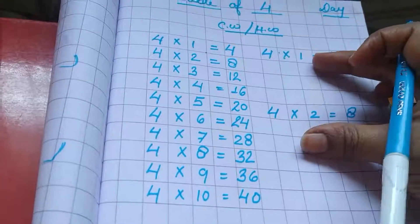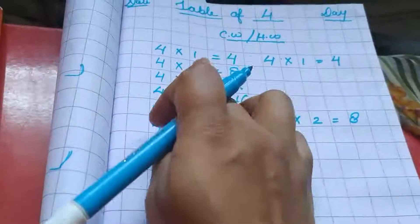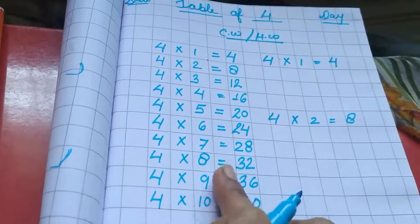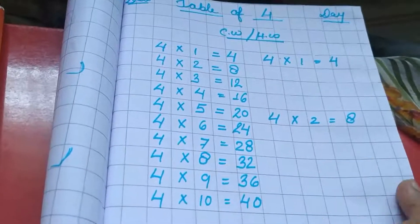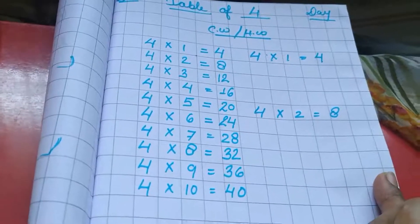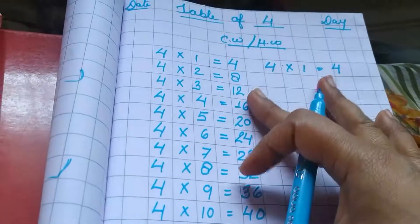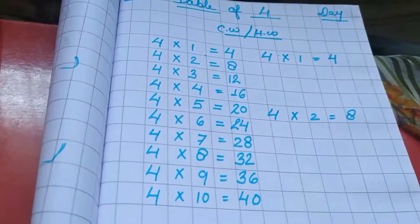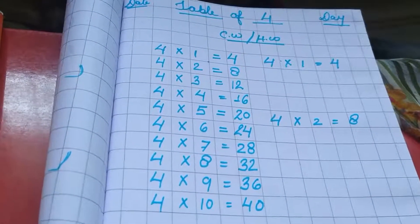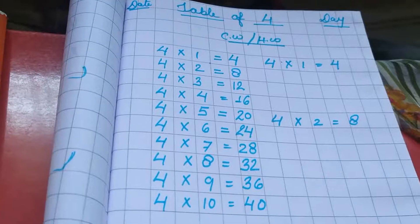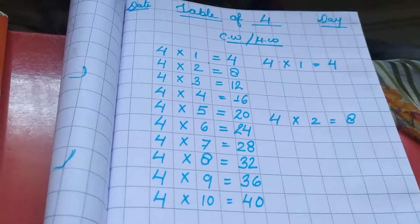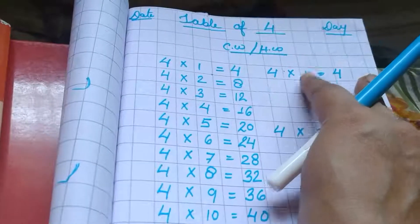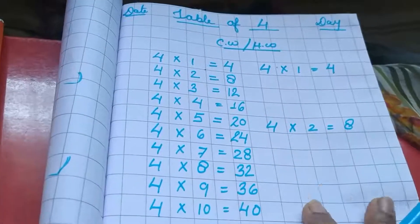Here: 4, 1, 4. And here: 4, 2, 8. Here: 4, 3, 12. Four fours — 4, 4, 16. This type of table you can do one time, or you can do it more. Or: 4, 1, 4 — 4, 2, 8 — 4, 3, 12 — all together.